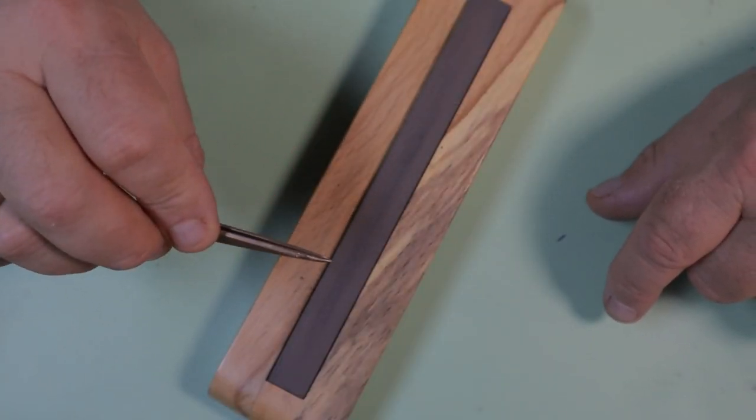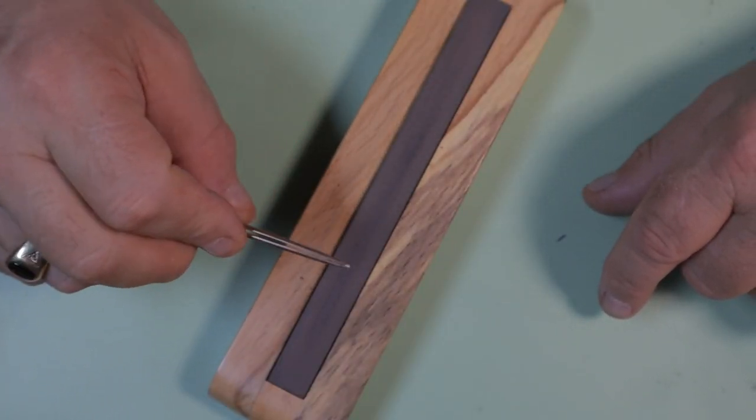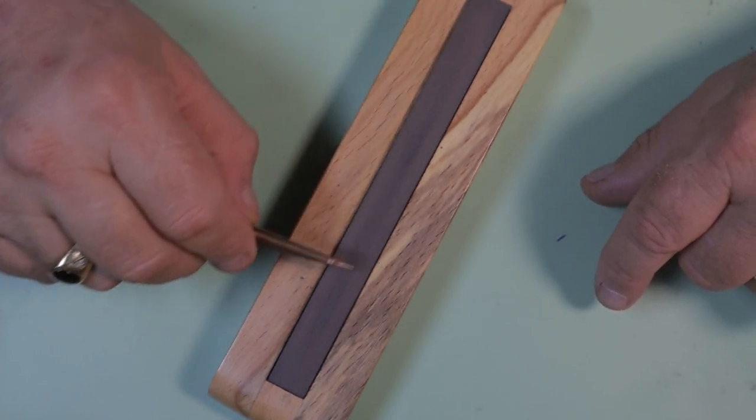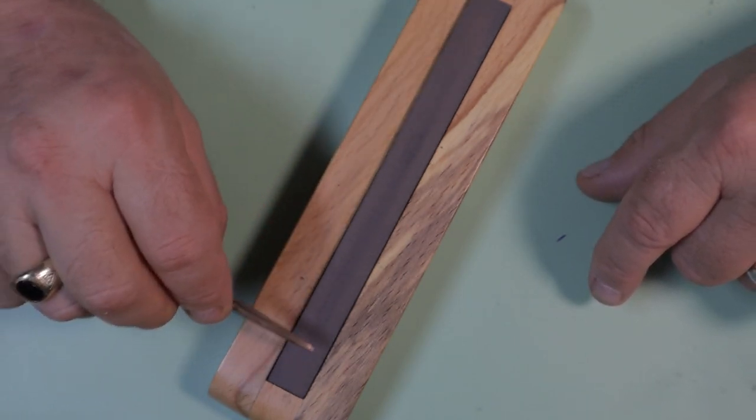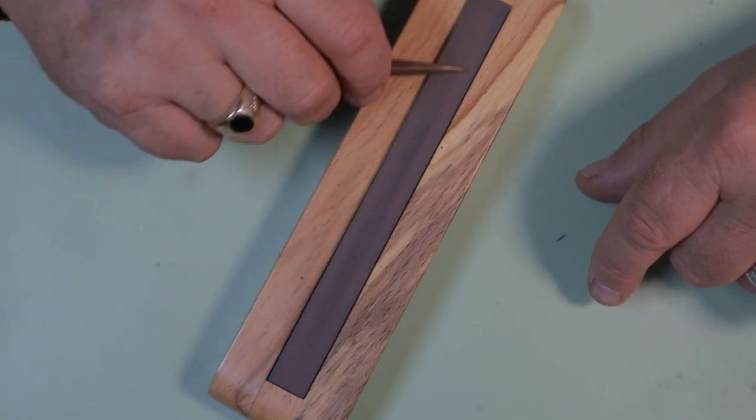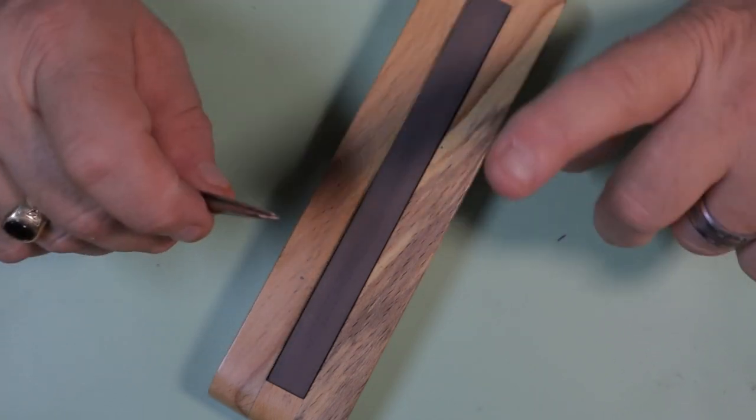Now as you shape the top and the bottom of the tweezer just use a rolling motion with your wrist as you go across the sharpening stone. Just remember to use the same number of strokes on each side of the tweezer.